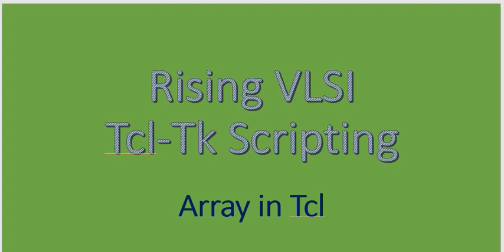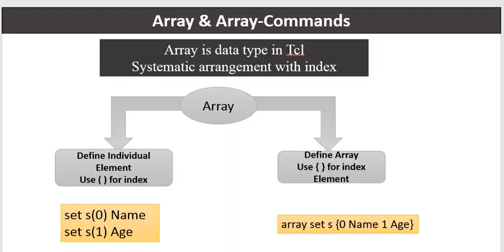Array is the third data type in TCL and it is considered as the most systematically arranged data type, where each element is represented by an index. In the previous cases like string and list, the index is system-defined, but in the case of arrays, the user has their choice — they can represent elements by their own index number.